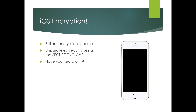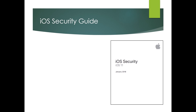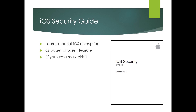The Secure Enclave was introduced with the iPhone 5S in 2013. Most of what we know about iOS security we learn from the iOS security guide, which is a PDF that Apple puts out periodically, pretty much every time there's a new iOS. Apple puts this out as a form of transparency, but it seems to be written in such a way that you're sure to not want to read it and probably won't understand it.